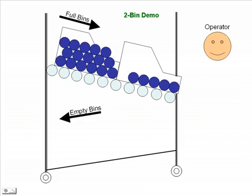First, let me tell you what we're looking at here before we do the animation. We're looking at an operator standing by a flow rack, or a gravity-fed flow rack — whatever you want to call it. There are rollers that the bins sit on that naturally use the force of gravity to draw the bins down closer to the operator. The operator has been consuming out of the bin closest to them and is getting close to the end. There's also a full bin of parts behind the mostly empty bin — that's the next one the operator will be consuming. We've got arrows at the top showing full bins coming in, and at the bottom empty bins going out.